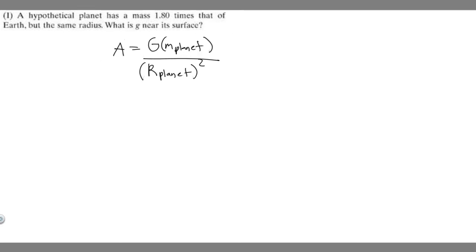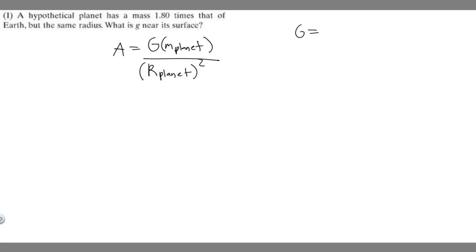What we need to do is decide what each of these numbers are. We need to find G first. G is just the gravitational constant, which is a number you just have to memorize. You need to know that it's equal to 6.67 times 10 to the minus 11. This is just the gravitational constant.